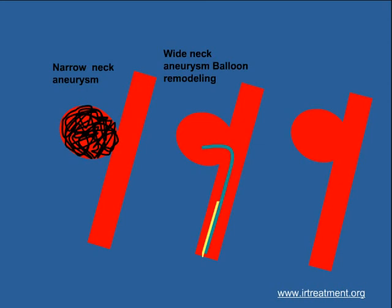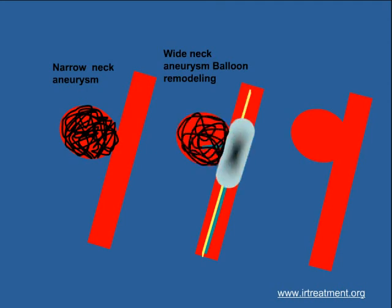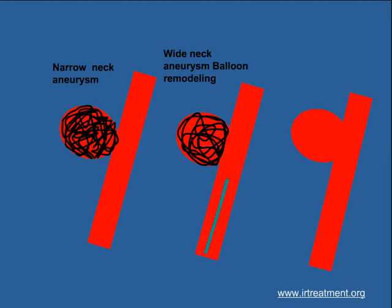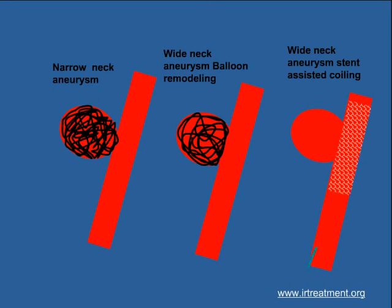When the neck is wide, this technique may not be sufficient. One may have to resort to using a balloon to support the coils from prolapsing. At times, we introduce a metal mesh called a stent and then coil through it to prevent the coils from prolapsing. Thus, interventional radiology provides the safest way to treat an acutely ruptured aneurysm.